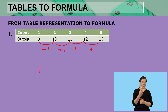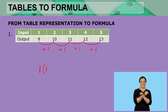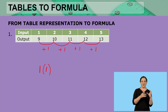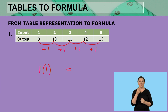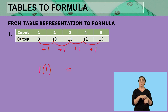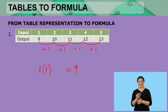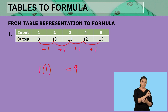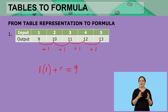We can see that we are adding 1 every time. So we are going to take that 1 and multiply it by our input value — in the first position that is 1. We know that from this product we need to add or subtract a certain value to get our first output value. So 1 multiplied by 1 is 1 — how do we get to 9? We are going to add 8.